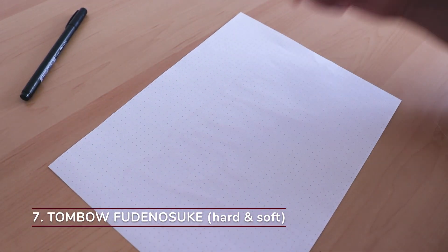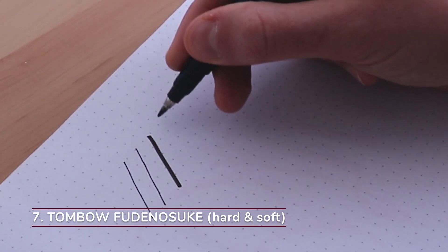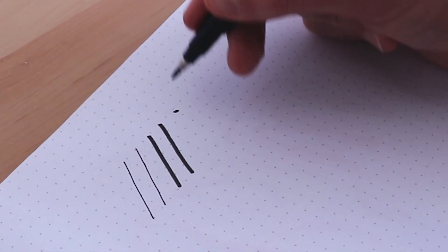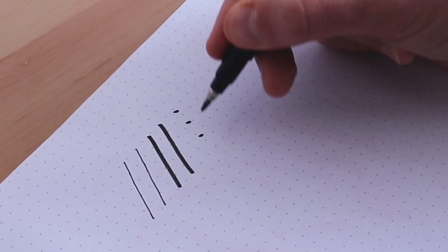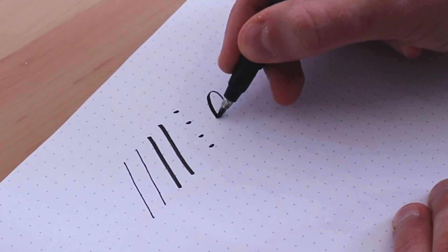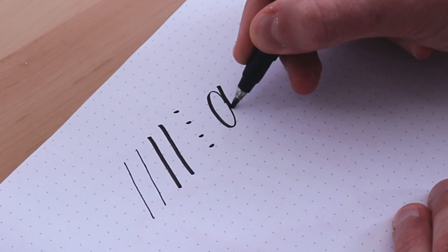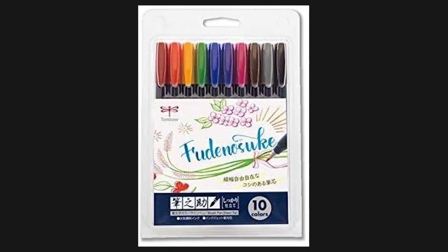Next up we have the beloved Tombow Fudenosuke. The size of the nib is small. The nib elasticity can be both firm and soft as the Tombow Fudenosuke comes in two variations soft and hard nib. The ink flow is medium leaning towards dry and as of recent this pen comes with 10 different colors.